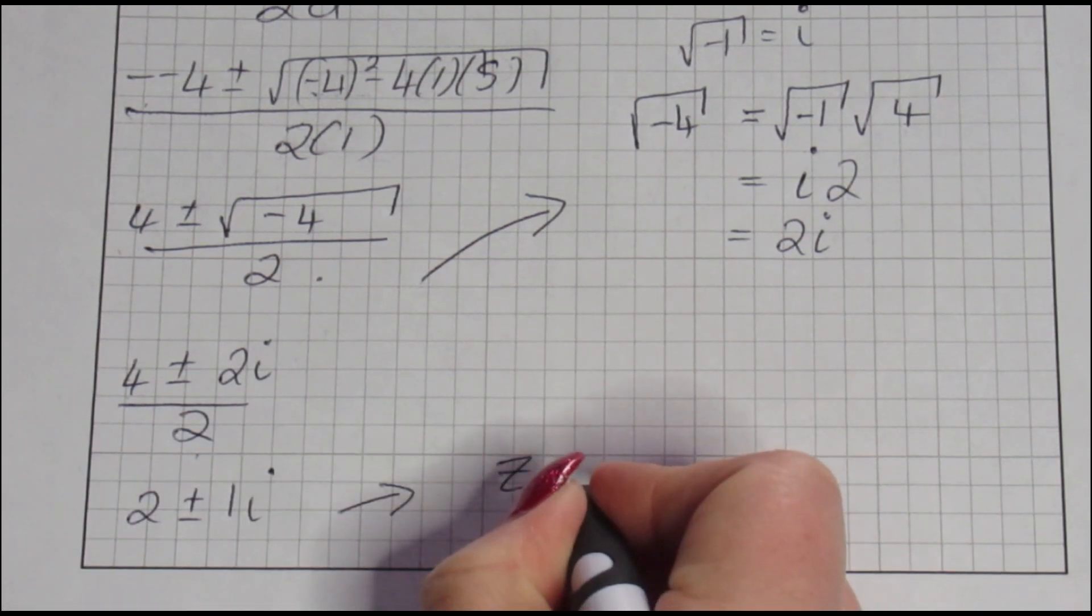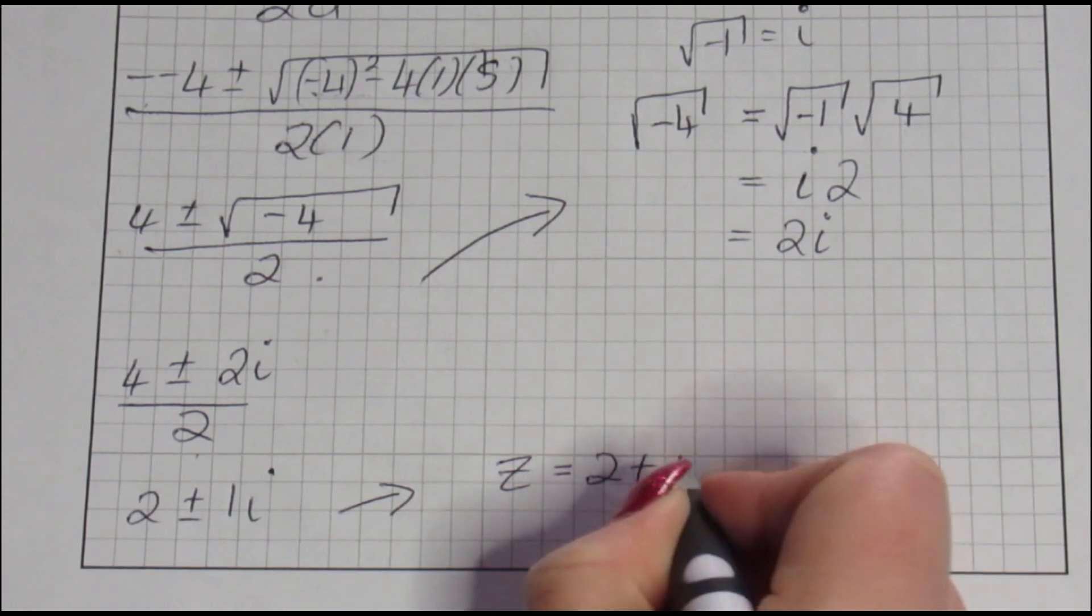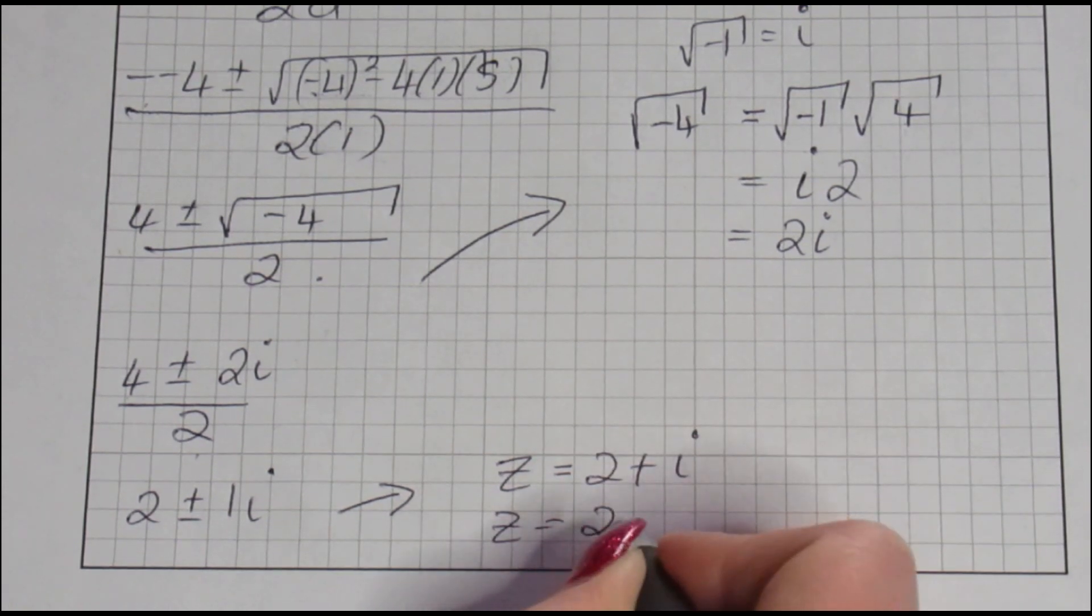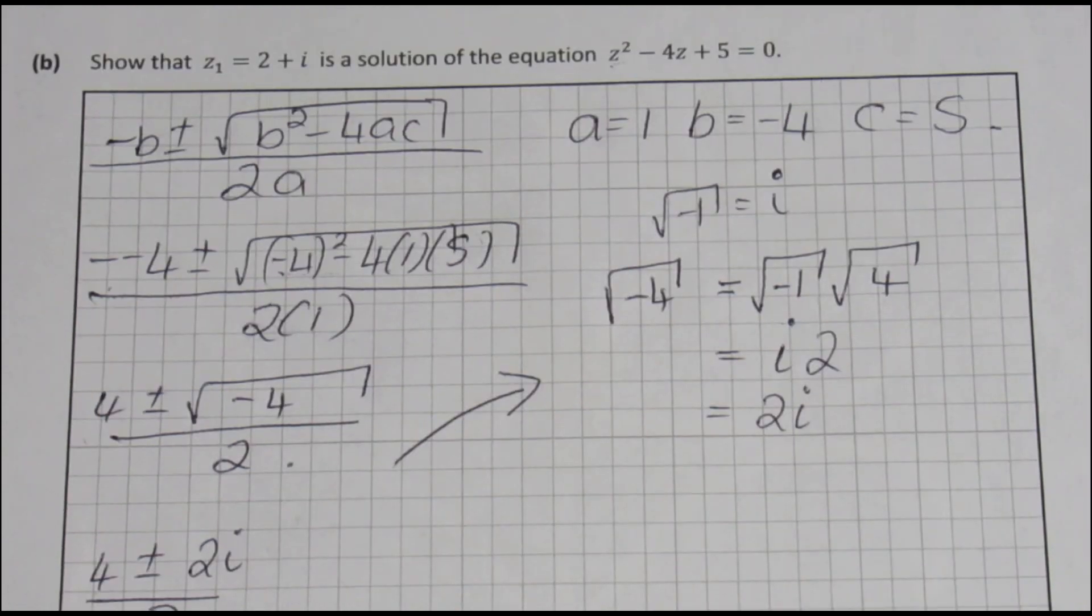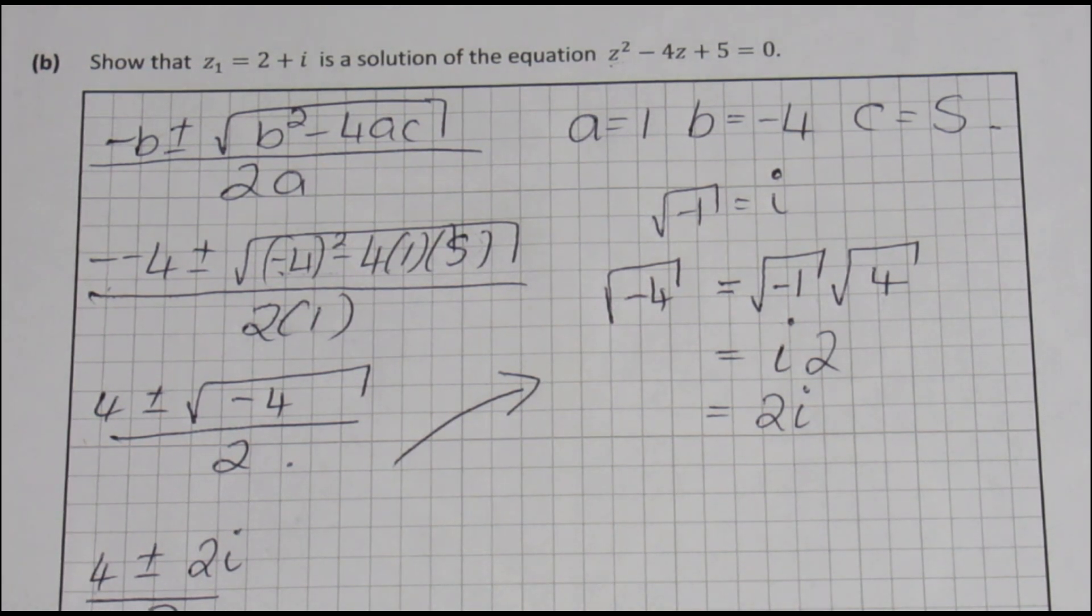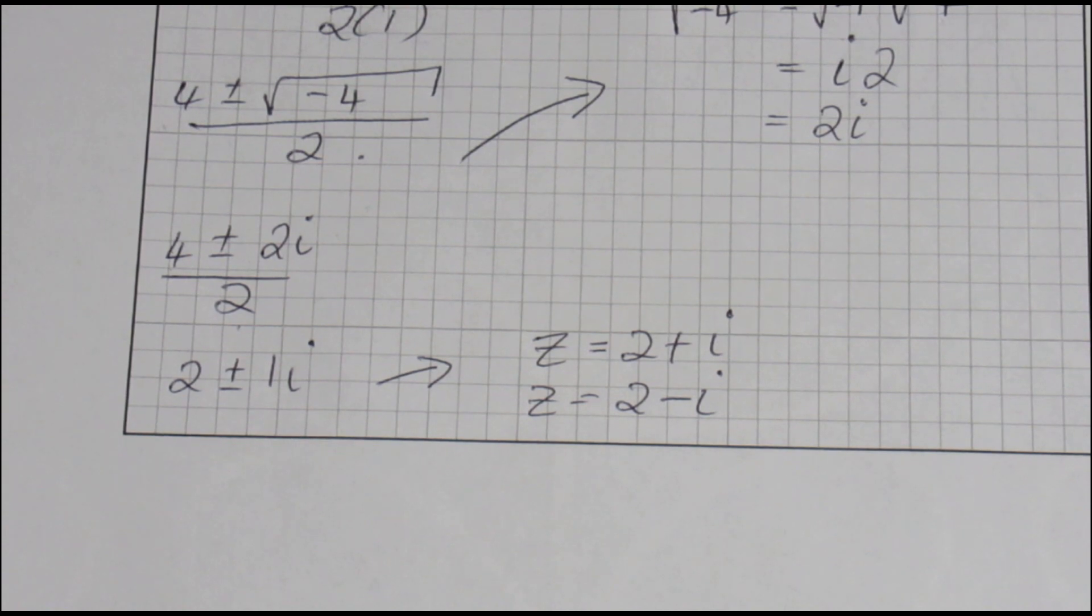Z is equal to 2 plus i and z is equal to 2 minus i. They are the solutions of this quadratic equation. This question asked us to show if 2 plus i is a solution for that equation. And from our work we can see yes it is.